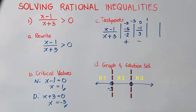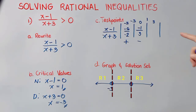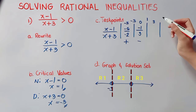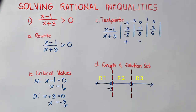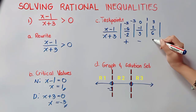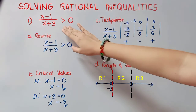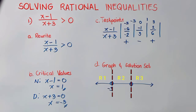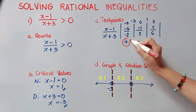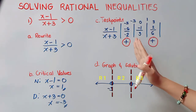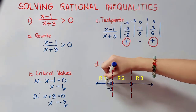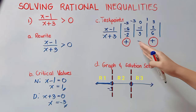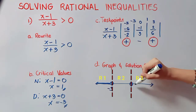For the last region, think of a number on this side — 2, 3, and so on. I will use 3. So 3 minus 1 is 2, all over 3 plus 3 is 6. Positive divided by positive results in a positive answer. Going back to our given, we are looking for values greater than 0, meaning positive values. So our solution is region 1 and region 3, and we will shade those regions on the graph.